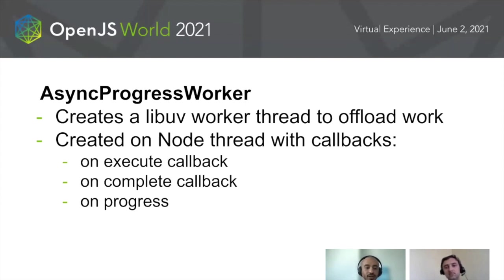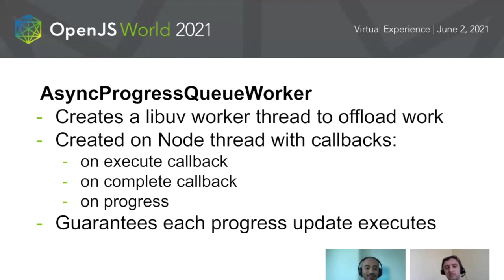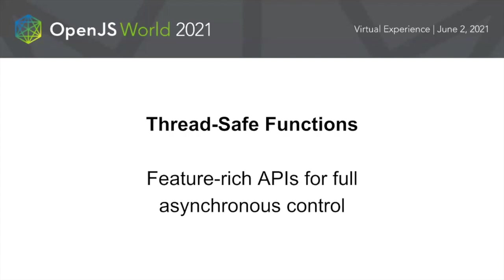In addition to a normal async worker, we have the progress worker. This has an additional callback — the on-progress callback — which executes on the node thread, allowing you to ping from your C++ thread into the node thread. The final variant is the async progress queue worker, which guarantees a progress update every time that you would like to send one. Next, we'll talk about thread-safe functions — feature-rich APIs that give you full control of how you would like to use node in any of your multi-threaded applications.